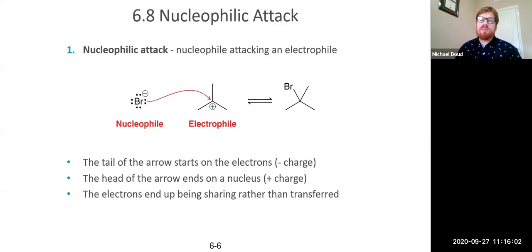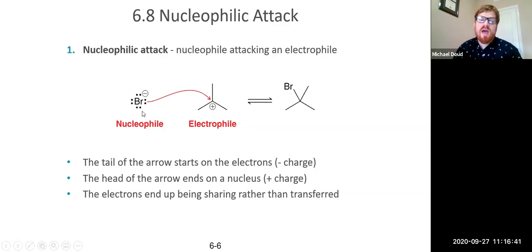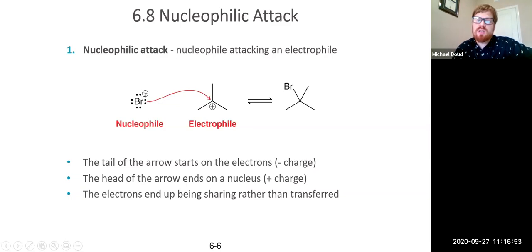The first pattern is nucleophilic attack. In nucleophilic attack, a lone pair from a nucleophile attacks an electrophile. The nucleophile is an area of high electron density; the electrophile is an area of low electron density. Just like water rushing downhill from high to low gravitational potential energy, electron density flows from the nucleophile into the low electron density area of the electrophile. The arrow starts from the lone pair on the nucleophile and points to the atom with the electrophilic positive or partial positive charge.